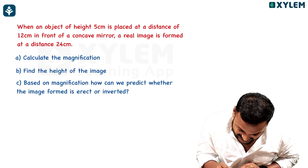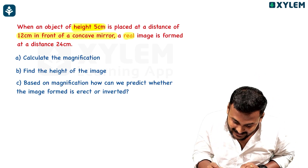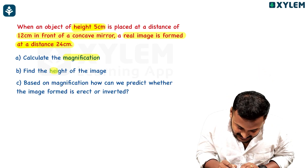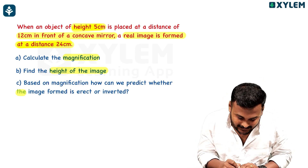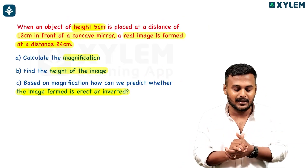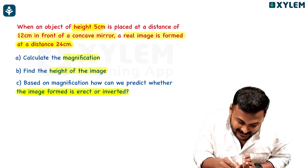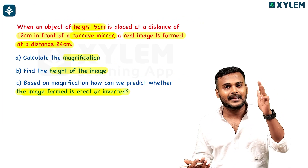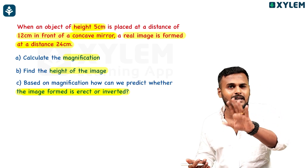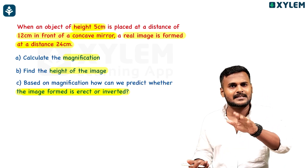When an object of height 5 cm is placed at a distance of 32 cm in front of a concave mirror, a real image is formed at a distance of 24 cm. Calculate: (a) magnification, (b) find the height of the image, and (c) based on magnification, predict whether the image formed is erect or inverted. This is reflection of light.